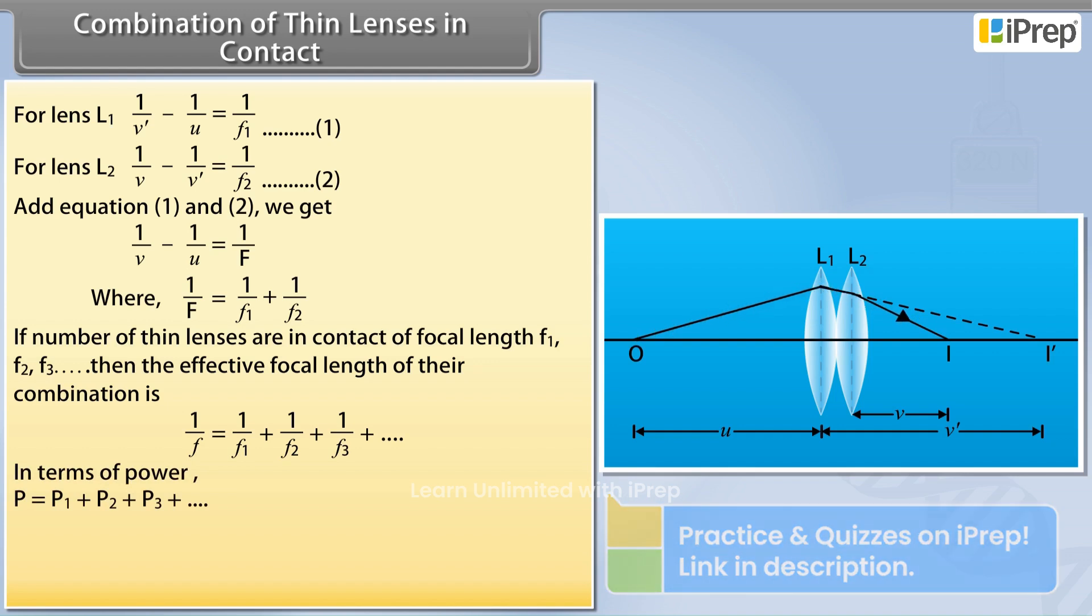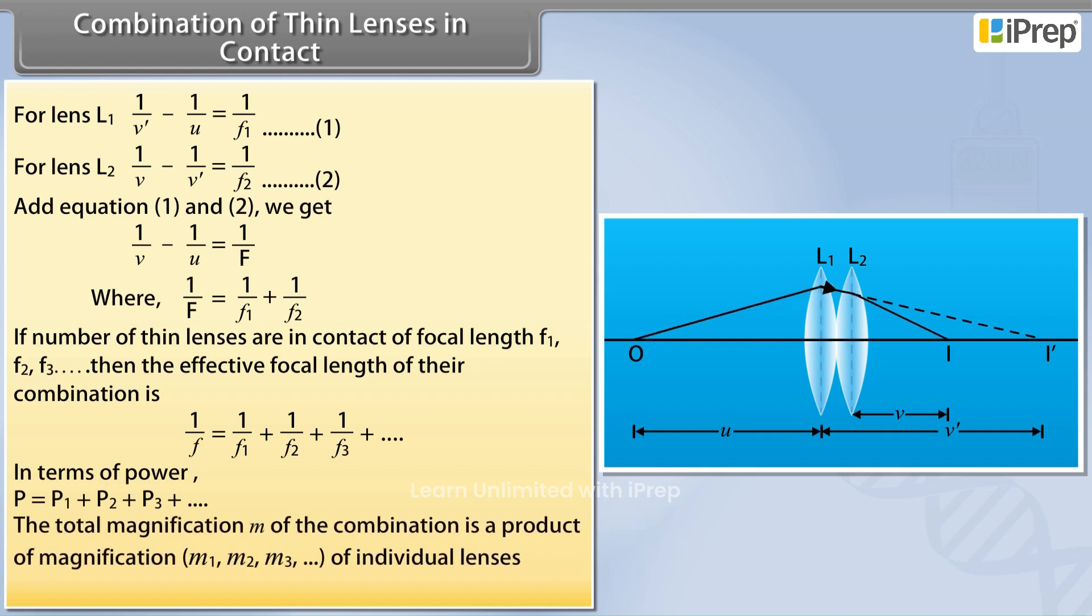The total magnification M of the combination is a product of magnification M1, M2, M3 and so on of individual lenses. M is equal to M1 times M2 times M3 and so on.